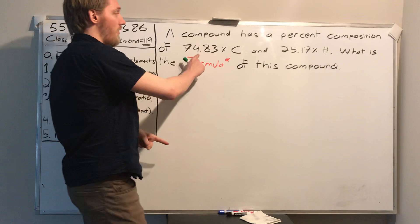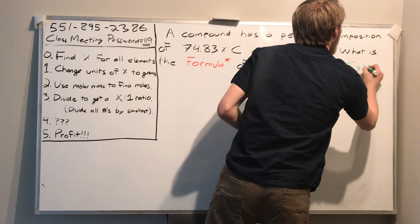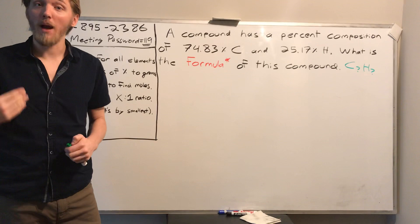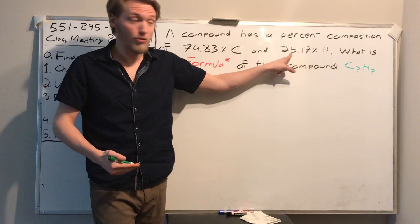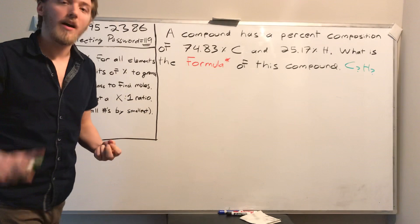74.83 plus 25.17 — yes, that's 100%. That means I know my formula is going to be C-something H-something. By mass, 74% is carbon and 25% is hydrogen, so most of the mass comes from carbon and less from hydrogen.